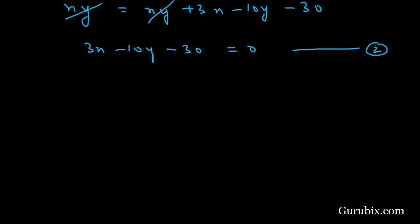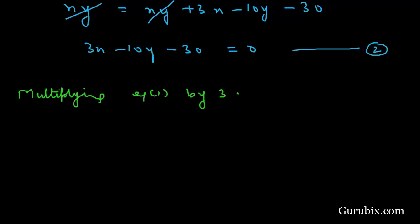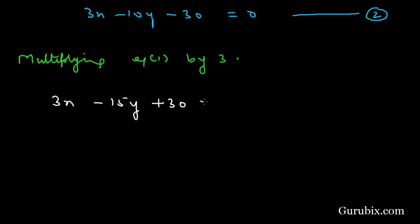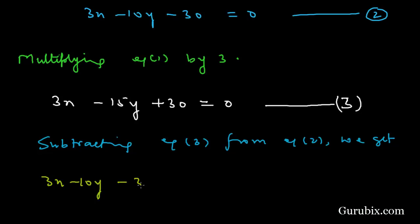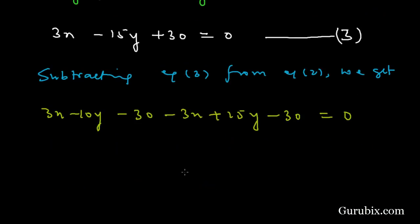We shall apply the elimination method to solve these two equations for x and y. Multiplying Equation 1 by 3 gives 3x minus 15y plus 30 equals 0 — this is Equation 3. Subtracting Equation 3 from Equation 2: (3x minus 10y minus 30) minus (3x minus 15y plus 30) equals 0. The 3x terms cancel, and we get 5y equals 60.